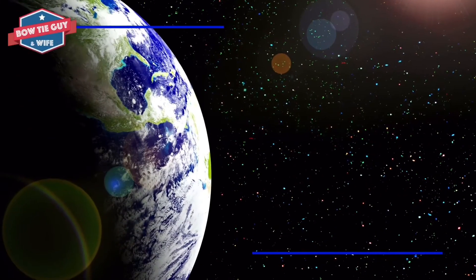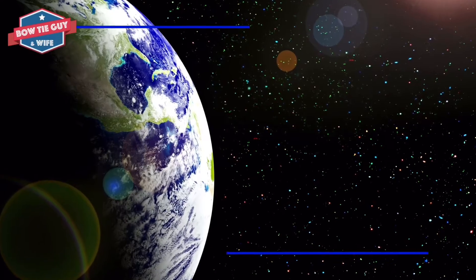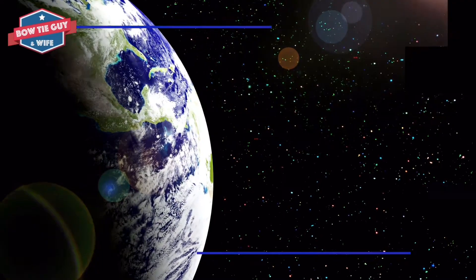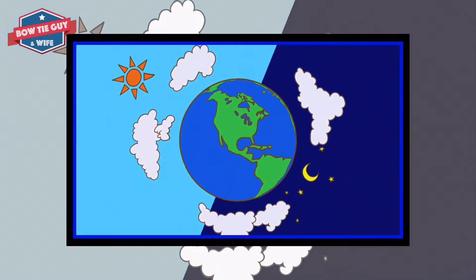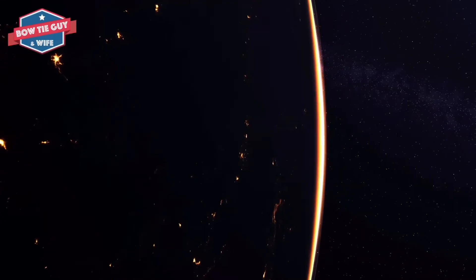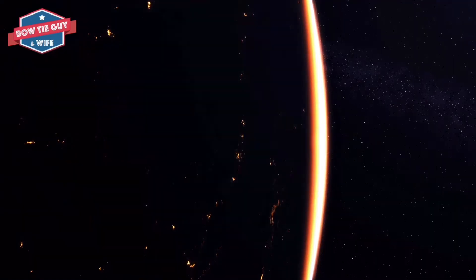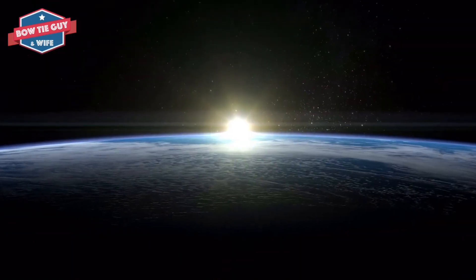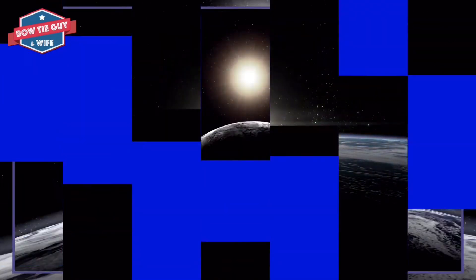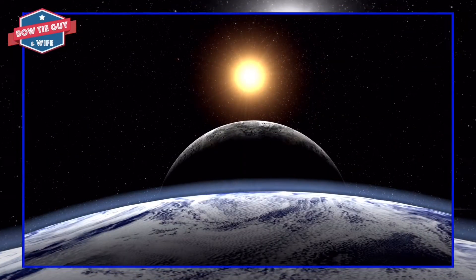The cycle of Earth's day and night is an example of the regular, predictable movement of objects in the sky. The length of day and night also changes throughout the year, with days being longer in the summer than in the winter. Earth completes one rotation on its axis in a 24-hour period.